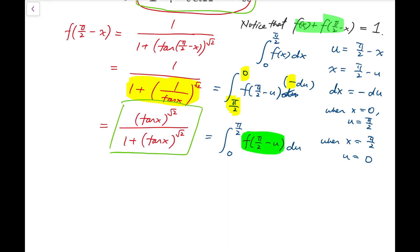Now at this point, recall that we have established the sum f of x plus f of pi over 2 minus x is actually equal to 1. So f of pi over 2 minus u is in fact 1 minus f of u.